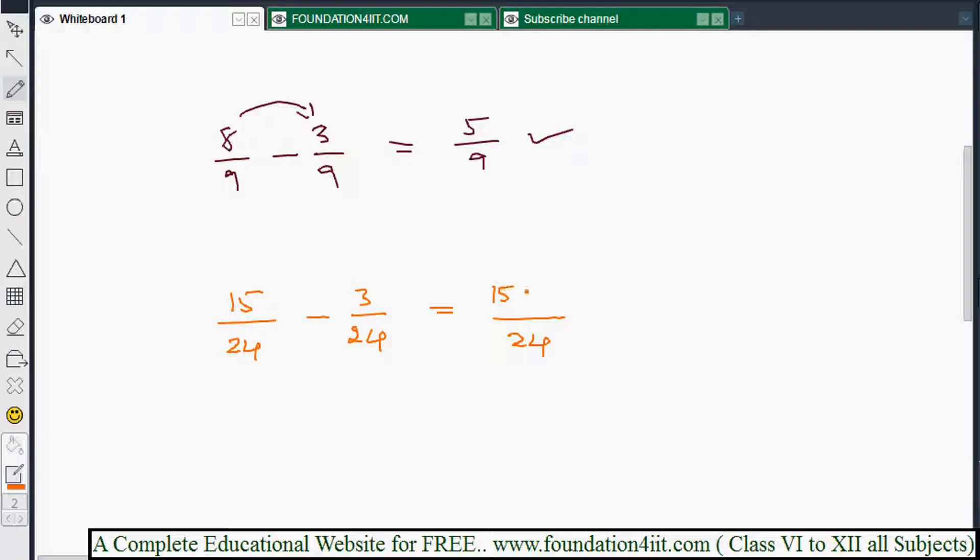First fraction numerator is 15 minus second fraction numerator is 3. 15 minus 3 is 12, so 12 by 24. Always try to keep the fractions in simplest form.